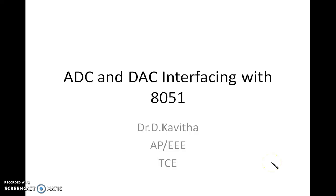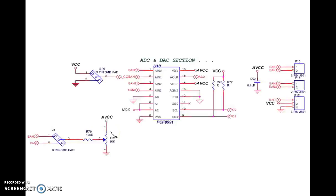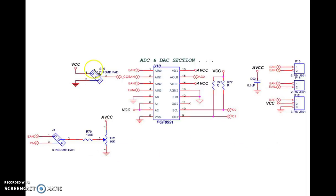Good day students. In this video we are going to discuss some important points related to analog to digital converter and digital to analog converter interfacing with AT51. The chip we are going to use is the PCF8591, a 16-pin IC which includes both ADC and DAC sections, and this configuration is available in your manual.